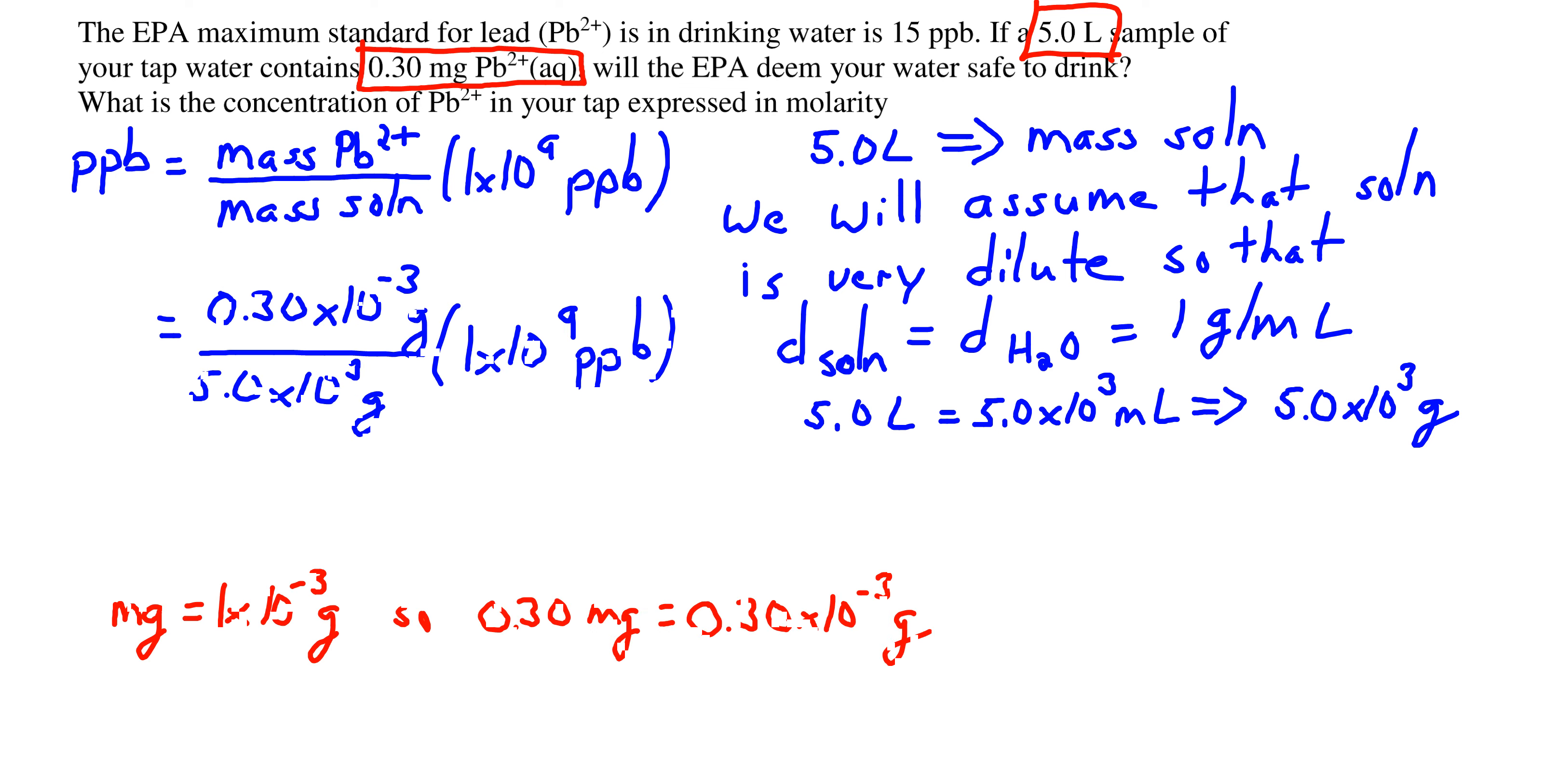Another little bit of business in terms of getting units to work. Milligrams are equal to 1 times 10 to the minus 3 grams, so we can express the mass of lead, which is 0.3 milligrams, as 0.3 times 10 to the minus third grams. We need to make sure that our units are the same, both top and bottom, otherwise they're not going to cancel out.